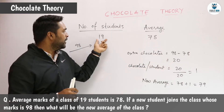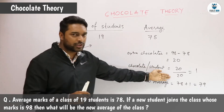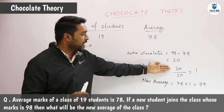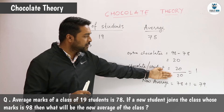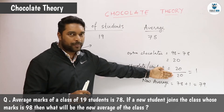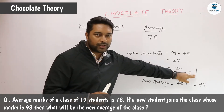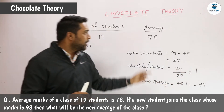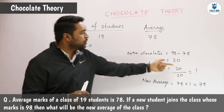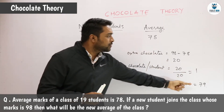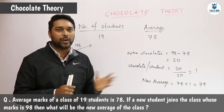Earlier there were 19 students; now including him there are 20 students. So the extra 20 chocolates will be distributed among 20 students, and each of them will get 1 chocolate. Earlier they had 78 chocolates; now they get 1 extra, so they will have 79 chocolates. This will be our new average.